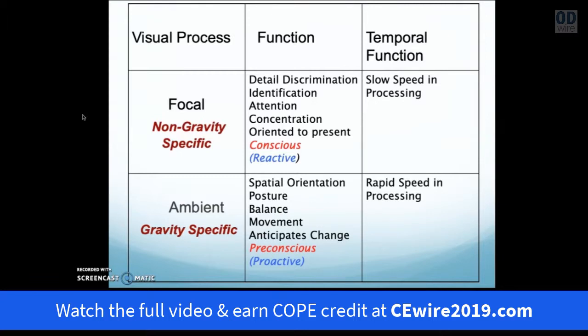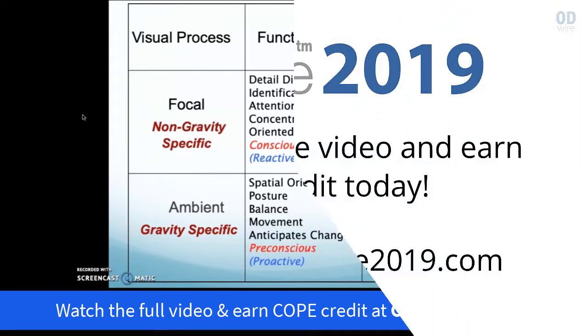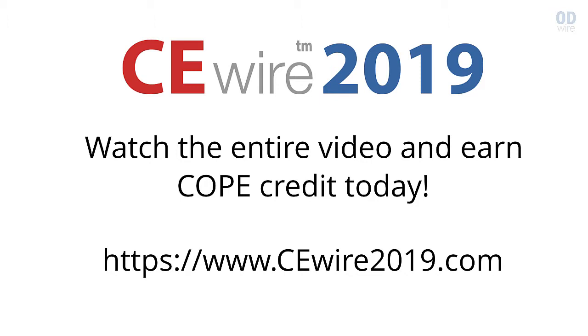However, the first visual process we are all born with is not the focal process — it is the spatial visual process known as the ambient process. It relates to information coming from muscles and joints; it is the proprioceptive system related to posture, balance, and movement. It is not conscious; it is pre-conscious, proactive, and anticipates change.